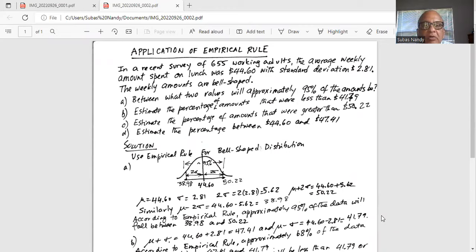The weekly amounts are bell-shaped. Between what two values will approximately 95% of the amounts be? Estimate the percentage of amounts that are less than $41.79.